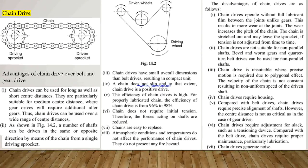First we start from chain drives. A chain drive, as shown in the figure, has a driving sprocket and driven sprocket with a chain rotating around them. A chain drive consists of an endless chain wrapped around two sprockets. A chain is a series of links connected by pin joints, and a sprocket is a toothed wheel with a special profile for the teeth.